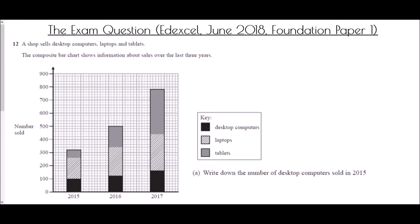And so we're going to end with an exam question and this came from the Edexcel paper in June 2018 and it was foundation paper one. Now before we get going I just want to point out that this is another type of bar chart it's what's known as a composite bar chart. It's where bars are actually stacked on top of each other and for different categories. So this one is telling us that a shop sells desktop computers laptops and tablets. The composite bar chart shows information about sales over the last three years. So the dark black parts are desktop computers, the cross-hatched parts are laptops and the grey parts are tablets.